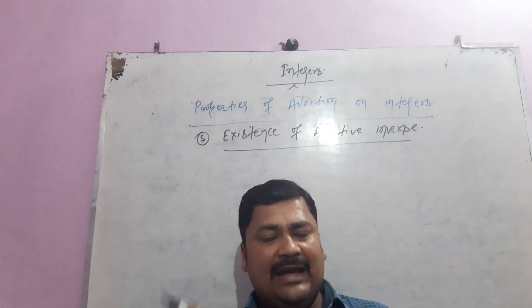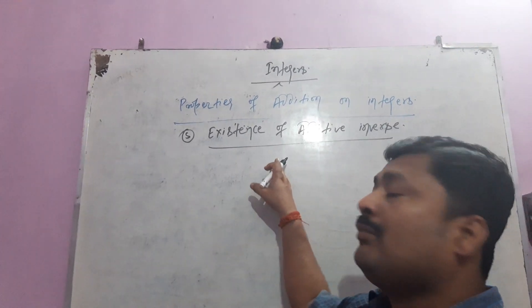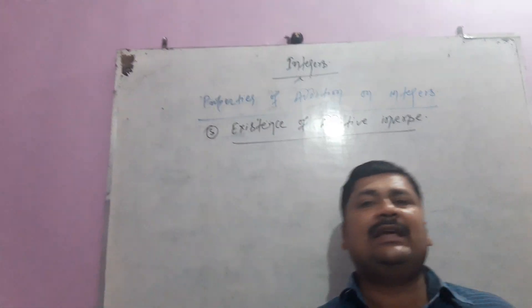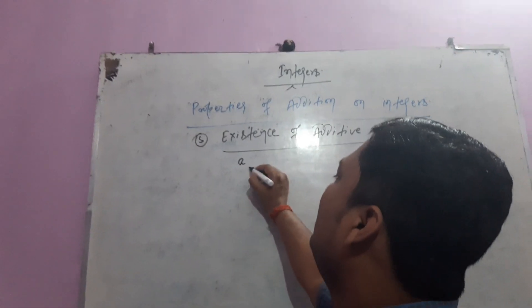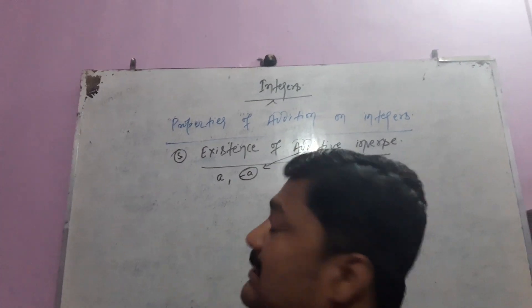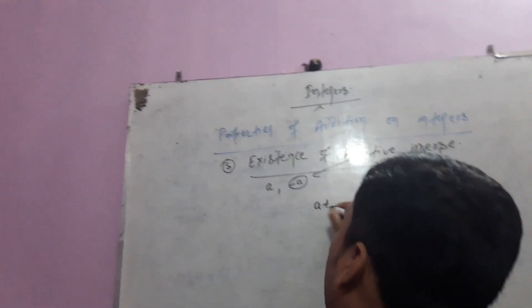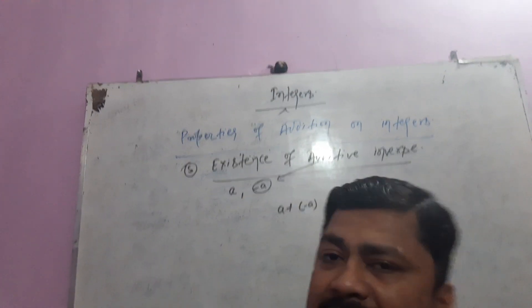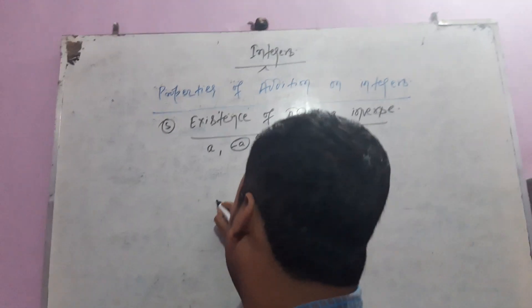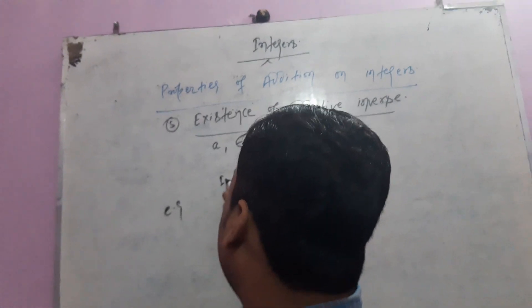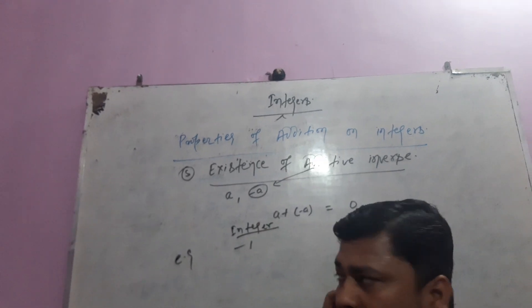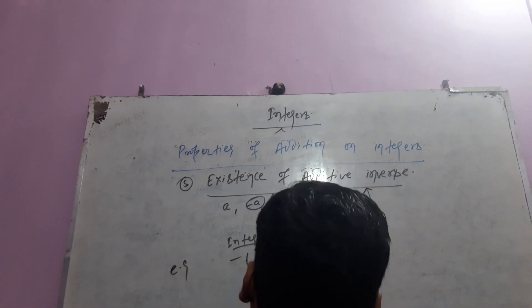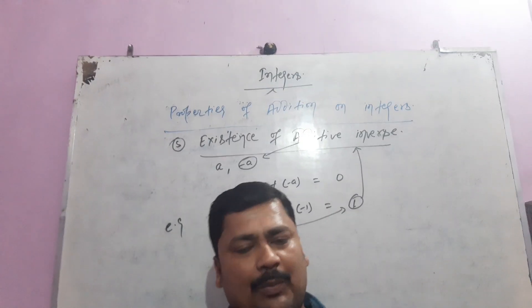According to this law, for every integer there exists an additive inverse. If we add an integer with its additive inverse, the sum will be 0. We can find the additive inverse of any integer by changing its sign. For example, the additive inverse of minus 1 is plus 1, since minus 1 plus 1 equals 0. These are the five laws we have studied about the properties of addition. See you later, bye.